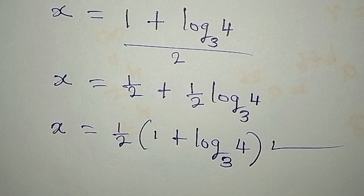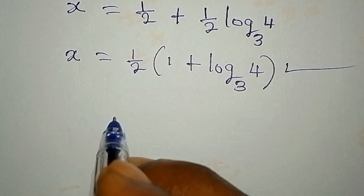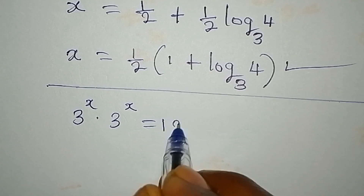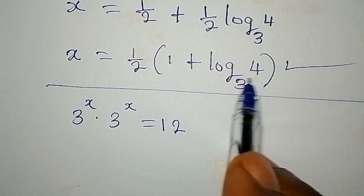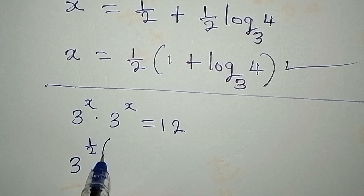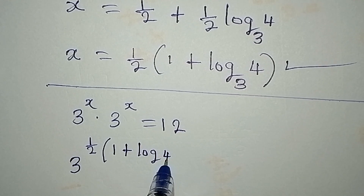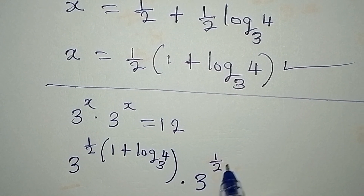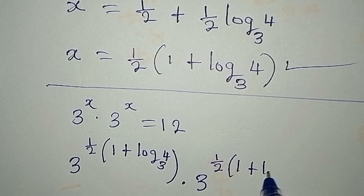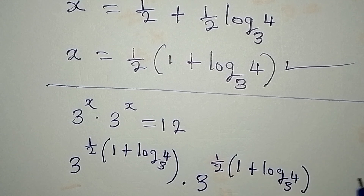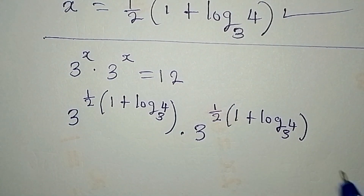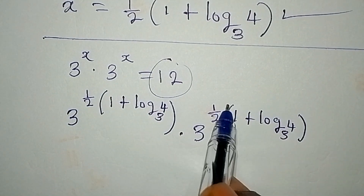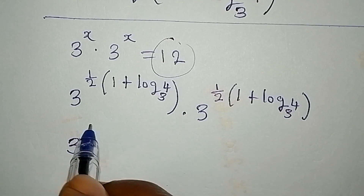Let's confirm our answer. We have 3 to the power of x multiplied by 3 to the power of x to give 12. Our x is one half times the quantity 1 plus log 4 to base 3. So we have 3 to the power of one half times 1 plus log 4 to base 3, multiplied by the same 3 to the power of one half times 1 plus log 4 to base 3.